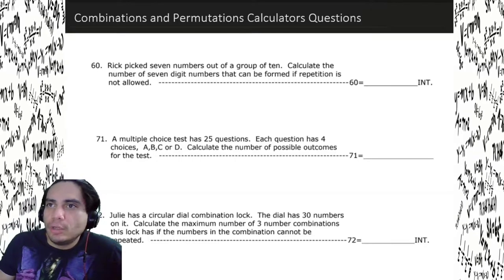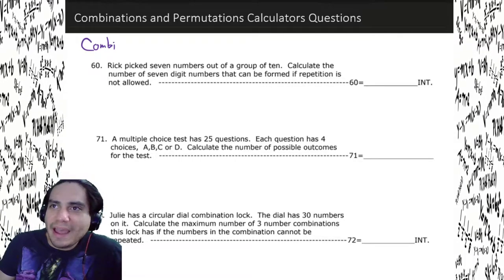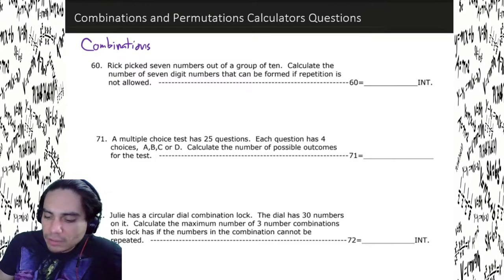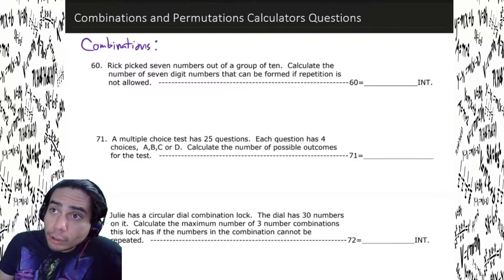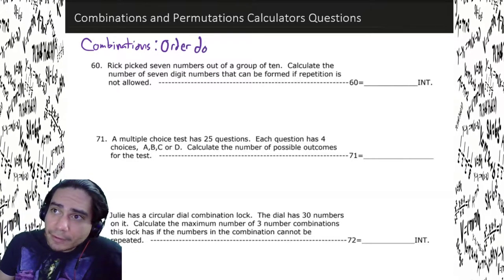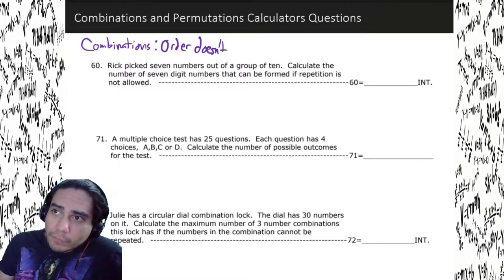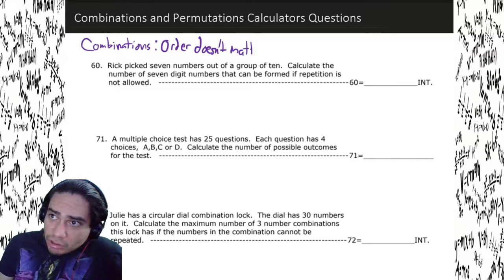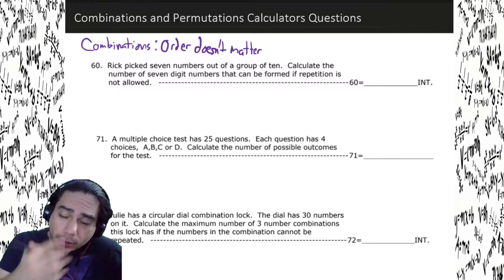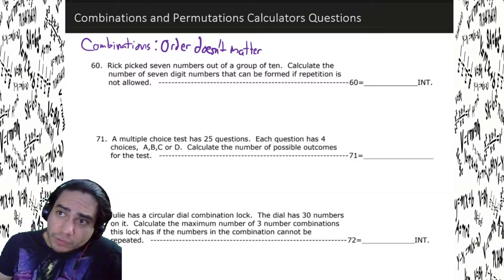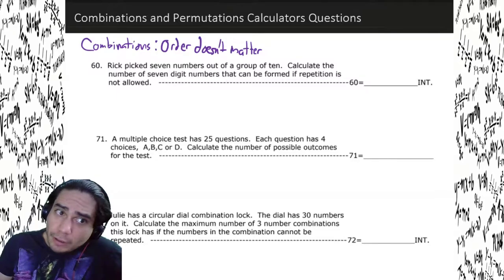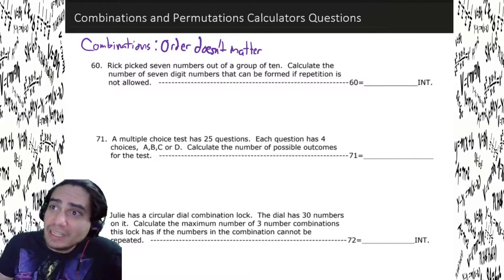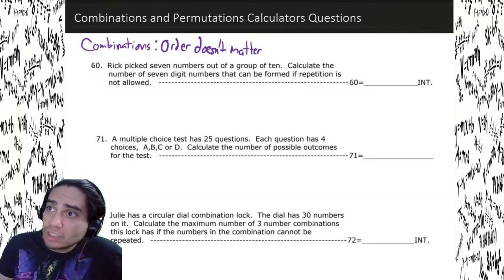So here's the deal. Combinations are a type of problem — combinations are the problems where order doesn't matter. For example, let's say I'm gonna pick a group of students from a class of 16, picking groups of four. It doesn't matter who I pick to be first, second, third, or fourth — that group of students is gonna be a combination. The order doesn't matter.